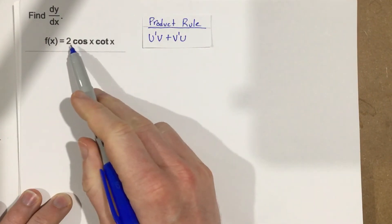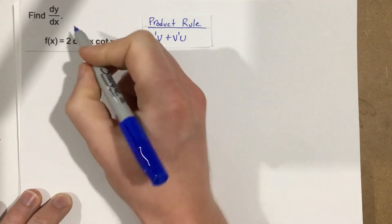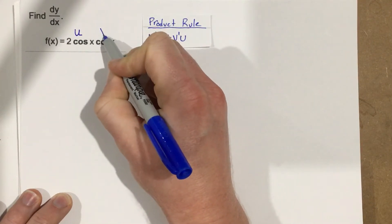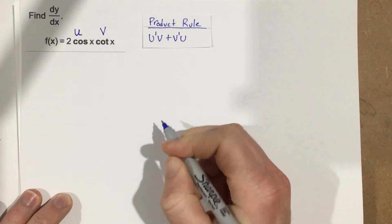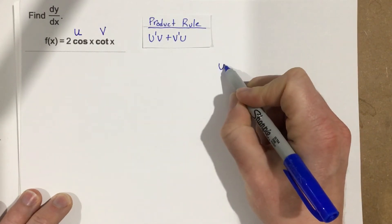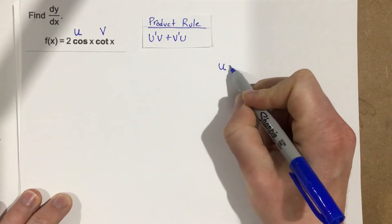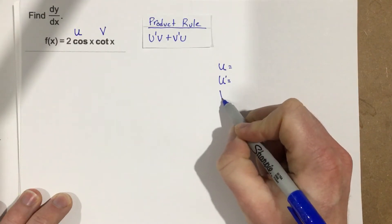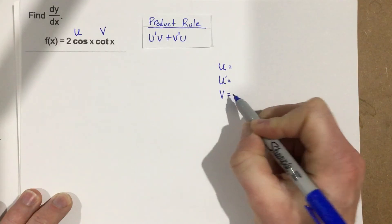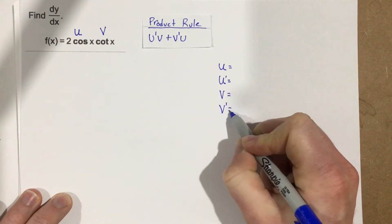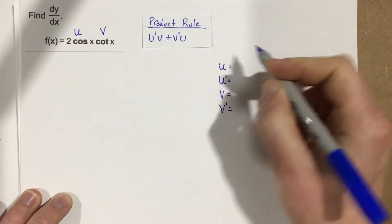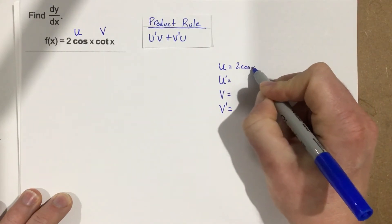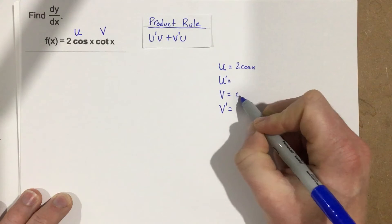I'm going to say that 2 cosine x is the u function, and cotangent x is the v function. So right here, I'm going to write u, u prime, v, v prime. So u is 2 cosine x, and v is cotangent x.